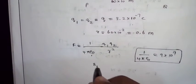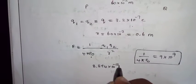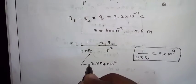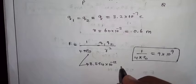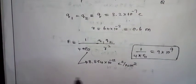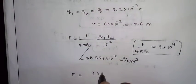This value of epsilon 0 is 8.854 into 10 power minus 12 coulomb square by newton meter square. This is the unit. 1 by 4 pi epsilon 0 is 9 into 10 power 9. Now we apply the force.